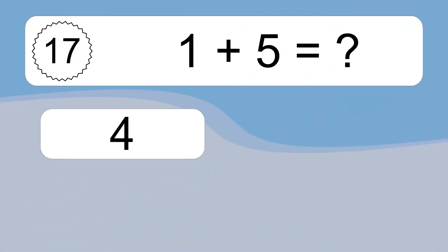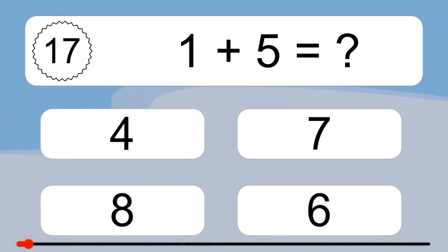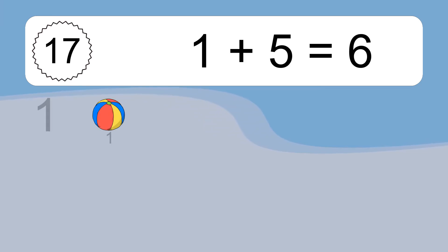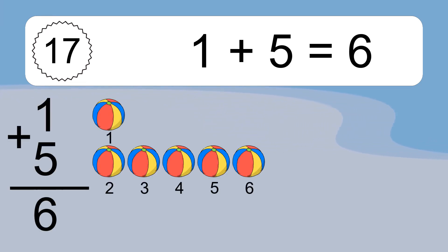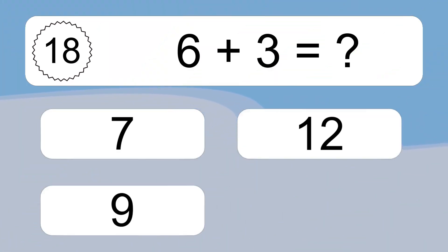1 plus 5 equals what? 1 plus 5 equals 6. Let's count it: 1, 2, 3, 4, 5, 6.